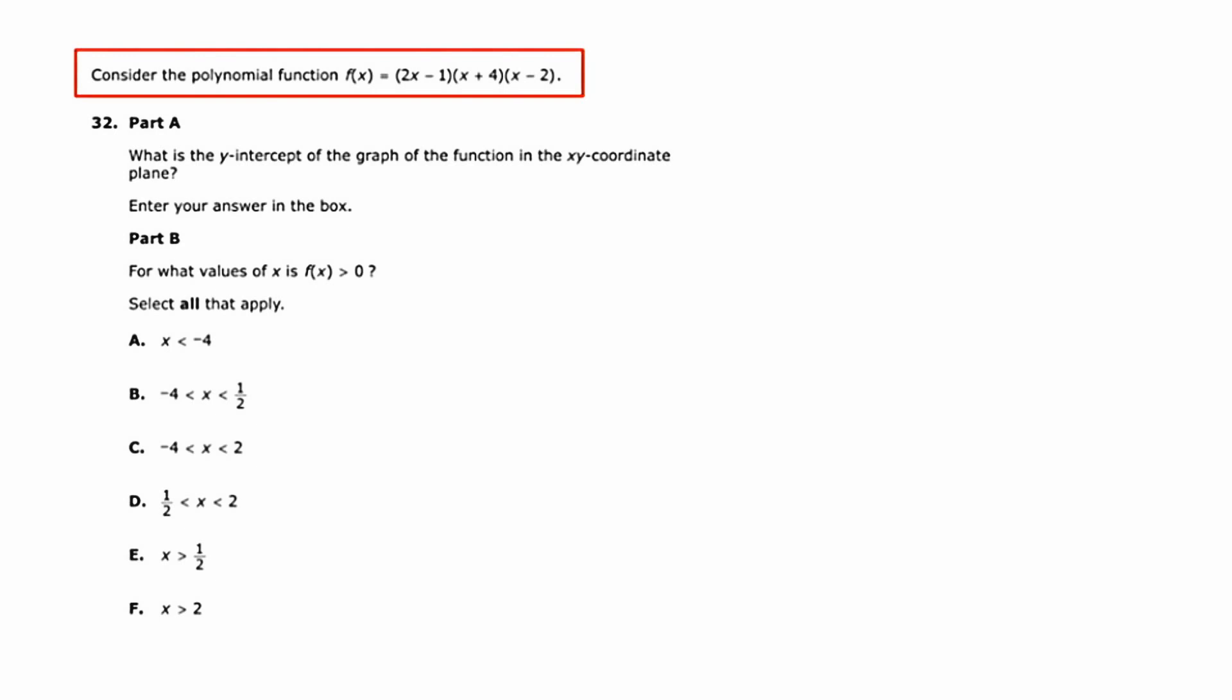Hey there, this is MathCamp321, presenting the solution to number 32 of the PARC Algebra 2 Practice Test. In this question, they're having us consider a polynomial function f(x) = (2x - 1)(x + 4)(x - 2), and they go on to ask us a series of four questions about this function.